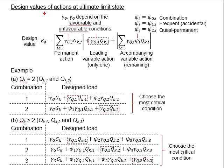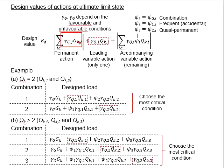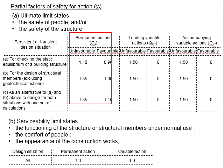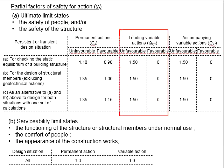Now let us discuss the application of the accompanying variable factors. Consider the design value: the permanent actions will be Gk multiplied by the partial factor of safety γG, which can be obtained from the table. Next, there will be the leading variable action Qk,1 multiplied by the partial factor of safety γQ, as referenced in the table.